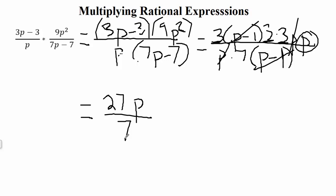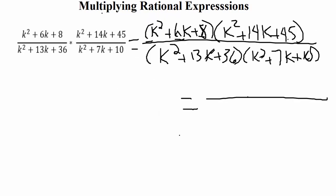In the numerator we have 3 times 3 times 3, which is 27, and one p left over — so 27p. In the denominator, all we have left is 7. So our answer is 27p over 7. Moving to the next example, we start with k² + 6k + 8 in the numerator and need to factor it.